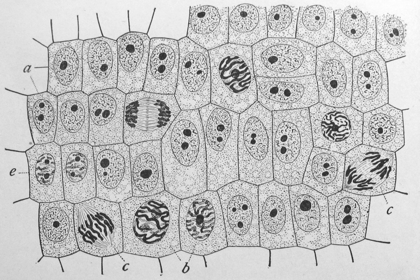The cell membrane, or plasma membrane, is a biological membrane that surrounds the cytoplasm of a cell. In animals, the plasma membrane is the outer boundary of the cell, while in plants and prokaryotes it is usually covered by a cell wall. This membrane serves to separate and protect a cell from its surrounding environment and is made mostly from a double layer of phospholipids, which are amphiphilic — partly hydrophobic and partly hydrophilic — hence called a phospholipid bilayer or fluid mosaic membrane. Embedded within this membrane is a variety of protein molecules that act as channels and pumps. The membrane is semi-permeable and selectively permeable. Cell surface membranes also contain receptor proteins that allow cells to detect external signaling molecules such as hormones.